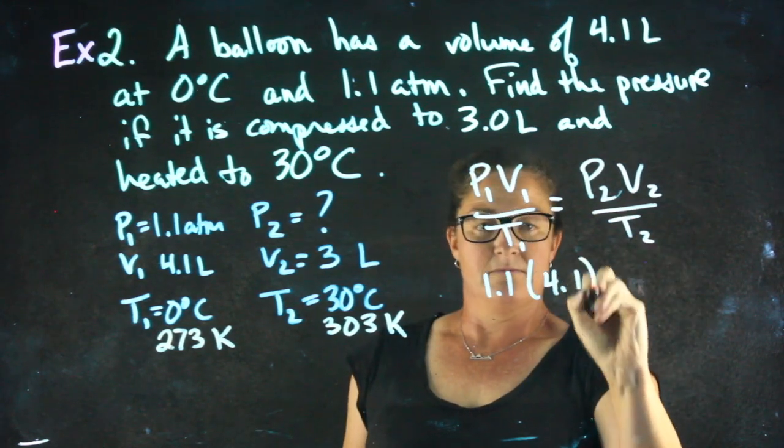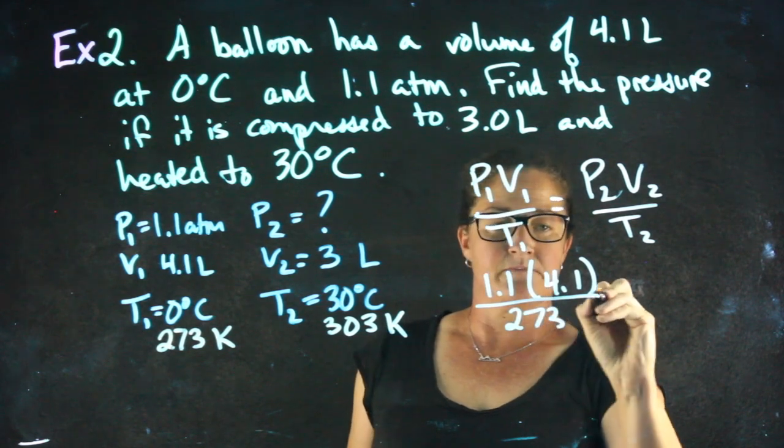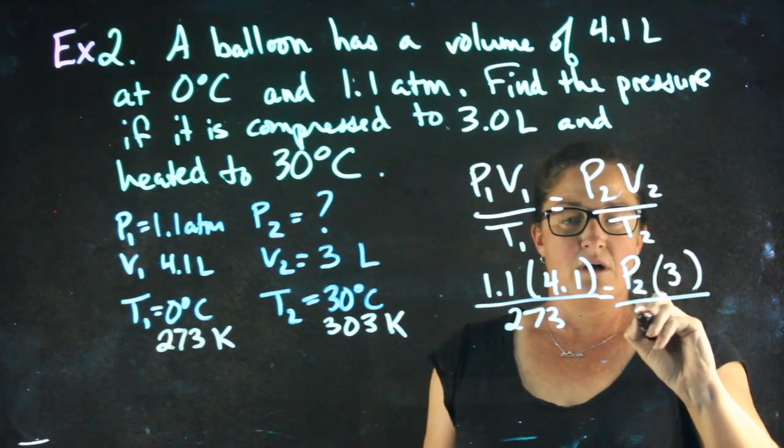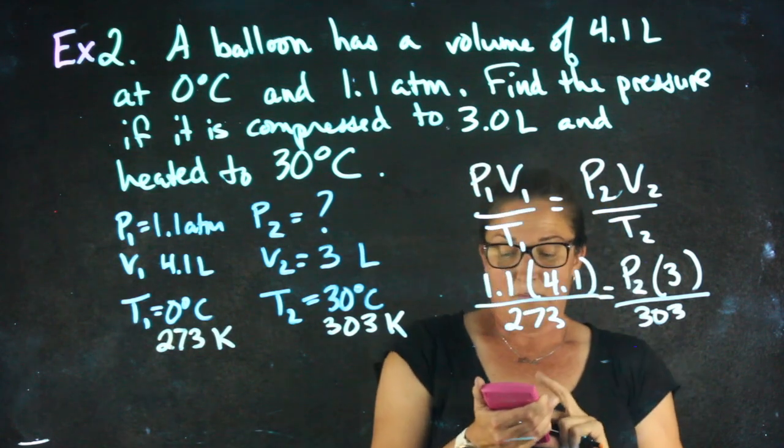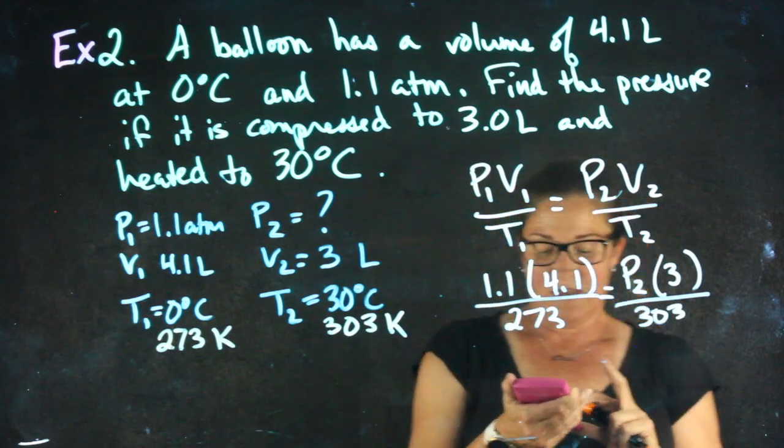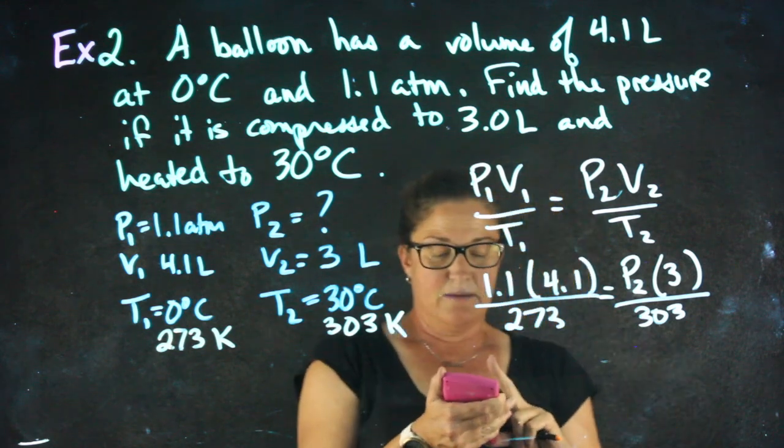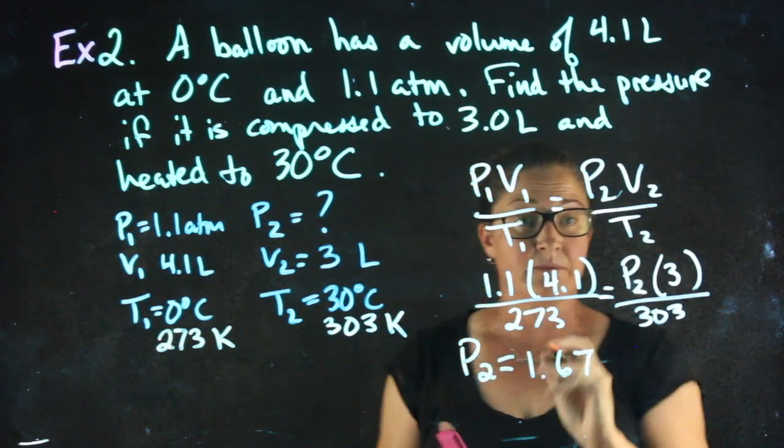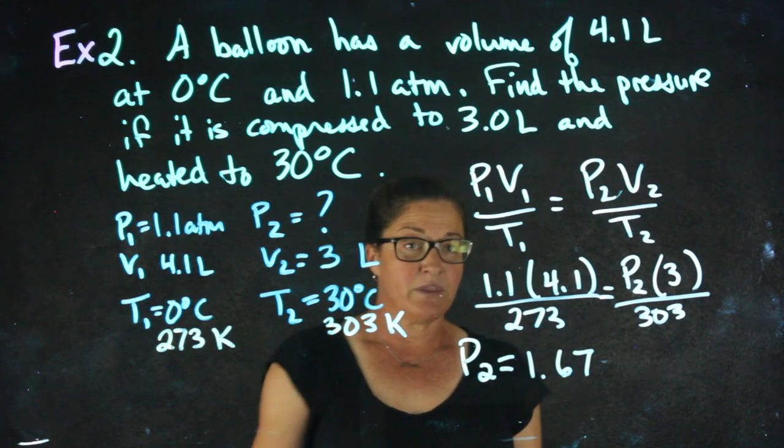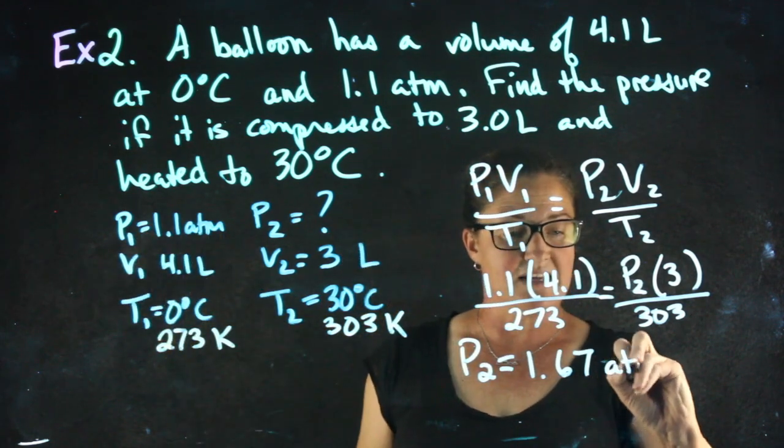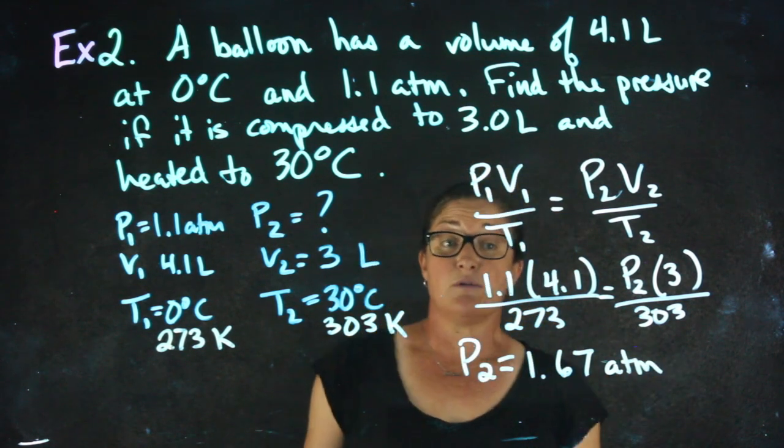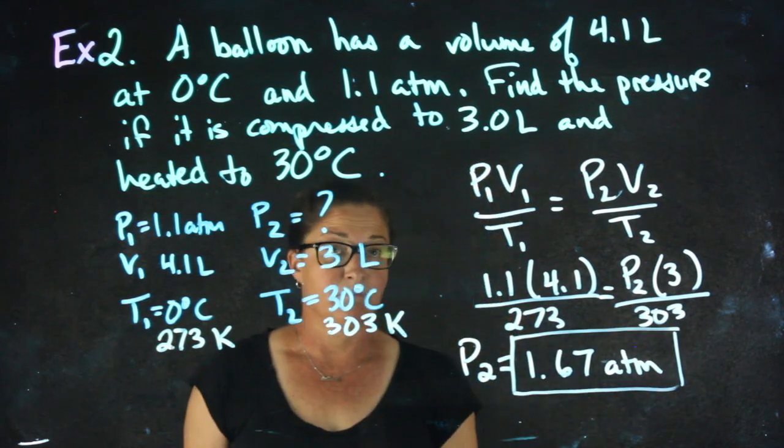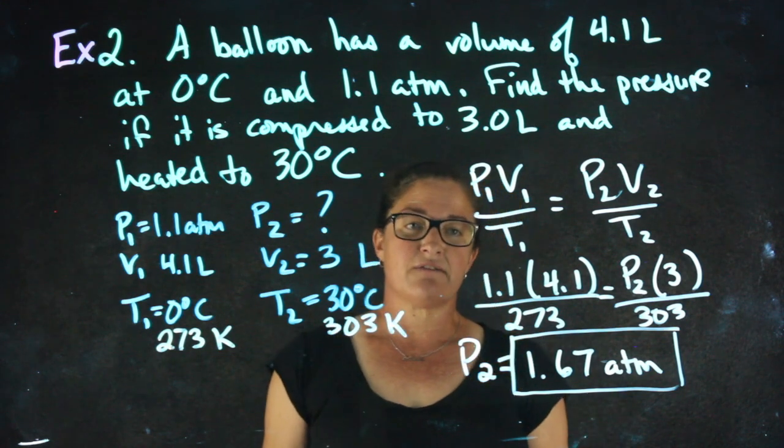1.1 times 4.1 over 273 equals P2, which is what I'm looking for, times 3 liters over 303 Kelvin. 1.1 times 4.1 times 303 divided by 273 divided by 3 gives me pressure 2 to be equal to 1.67. I need to ask myself what units is that in? If the other pressure was an atm, this pressure was an atm. The question didn't tell me what units to find pressure in, so I can stop right here and just note that it's 1.67 atm. If it had asked me to find it in Torr or kPa, I would have had to convert units afterwards.